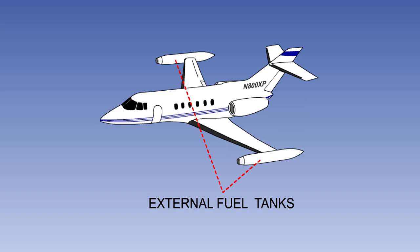Rigid tanks may be fitted externally, on the wing tip for example. They may be made of metal or of a composite construction.